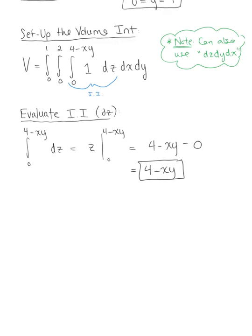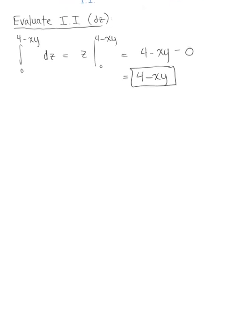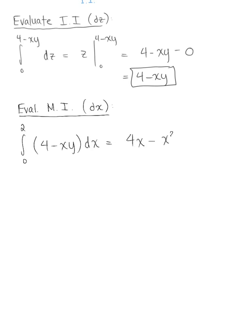Plugging this back in, we're now ready to evaluate the middle integral, which here is with respect to x. This will be the integral from 0 to 2 of 4 minus xy dx. Integrating with respect to x, we have 4x minus x squared times y by 2 from 0 to 2.